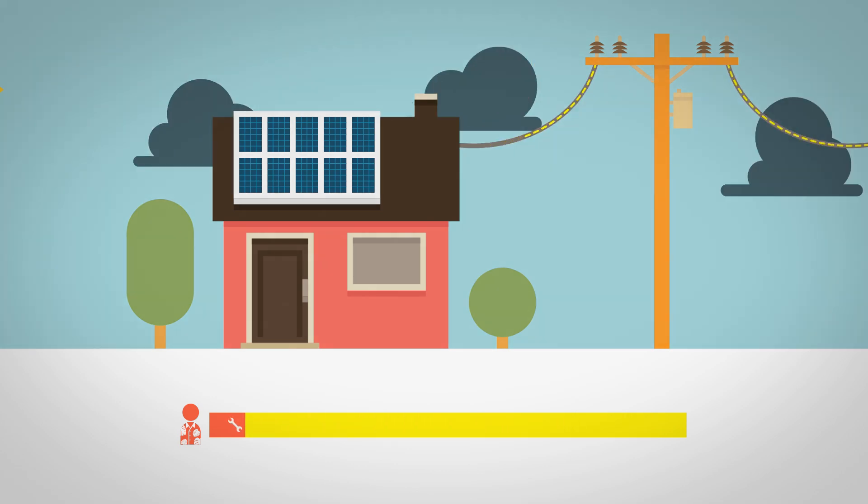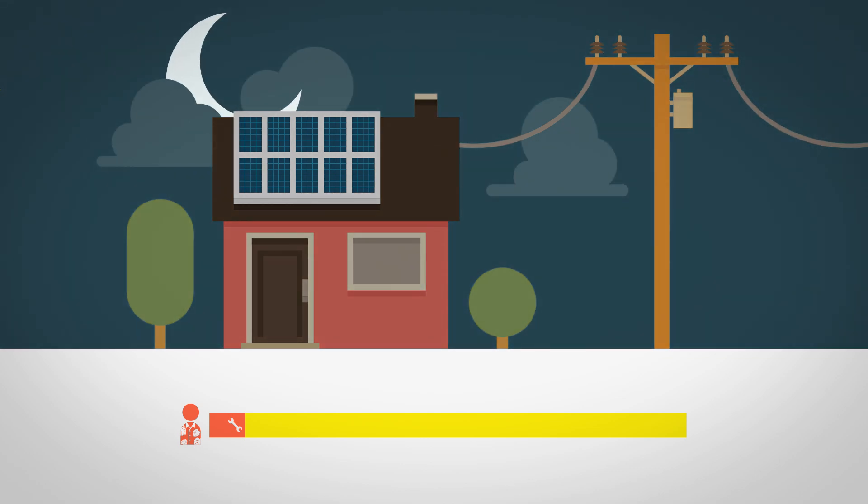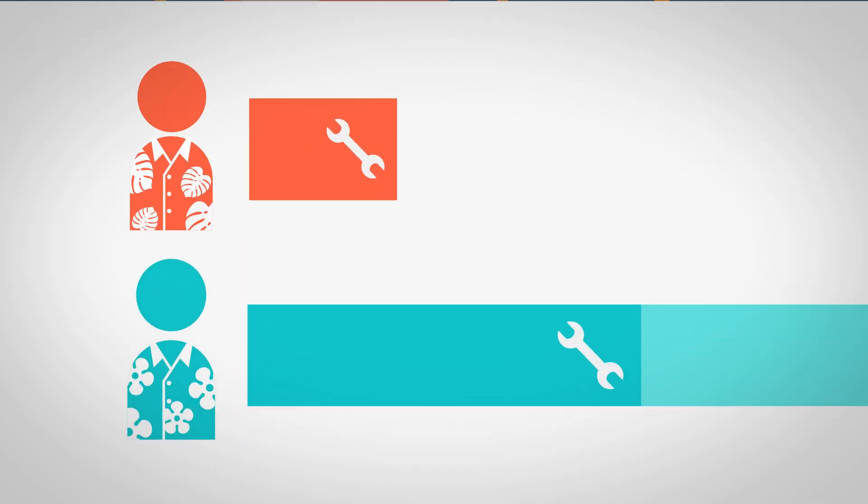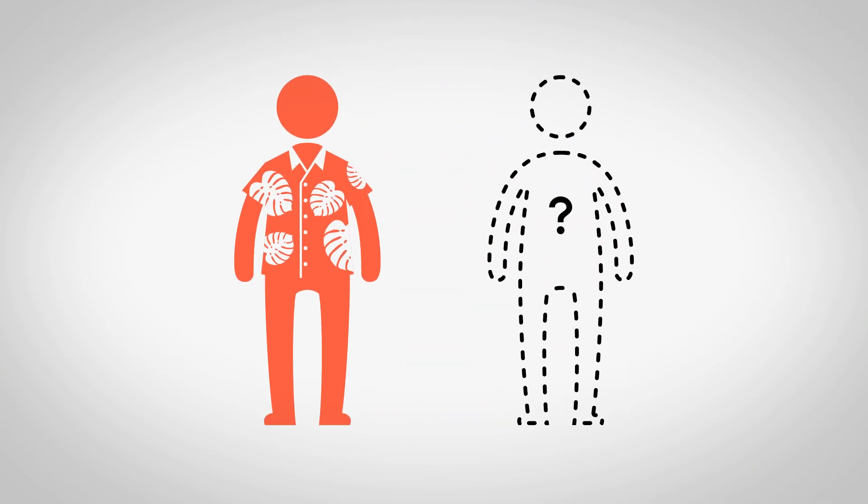On cloudy days and at night when his solar doesn't produce electricity, Sam gets his electricity from the grid. But he doesn't pay his share to operate, maintain, and improve the grid based on what he uses. So who does pay?